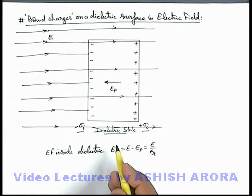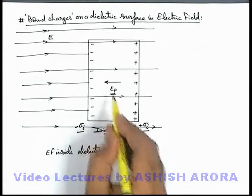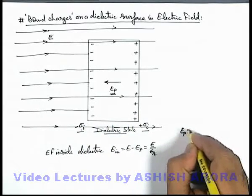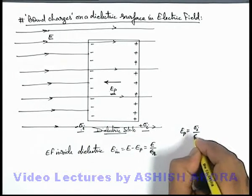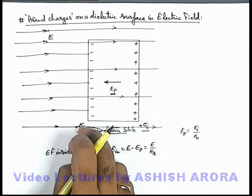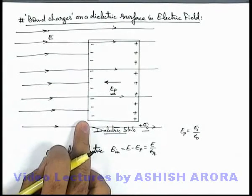Now in this situation we can see if external electric field is E, internal is Eₚ. Eₚ is obviously due to these bound charges. The magnitude of this Eₚ we can write as σᵢ by ε₀, if these surfaces are considered to be large compared to thickness and the uniformity of electric field is considered onto it.